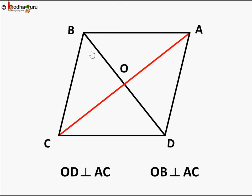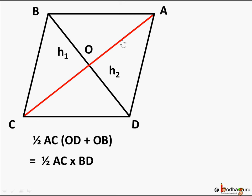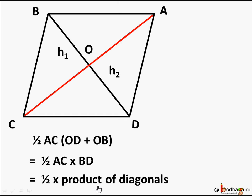So if we have to find the area of this rhombus, all we need to do is find the area of triangle ABC and triangle ADC and sum them to get the area of the rhombus. That gives us half of diagonal AC multiplied by both heights — H1 which is OB and H2 which is OD. In the case of a rhombus, since both perpendiculars pass through the same point O, H1 plus H2 equals BD.